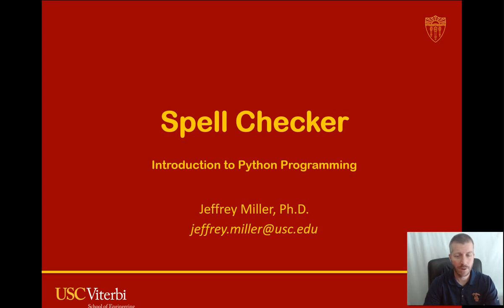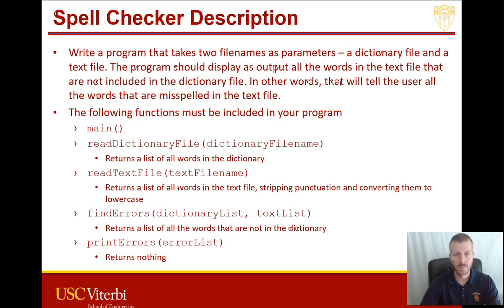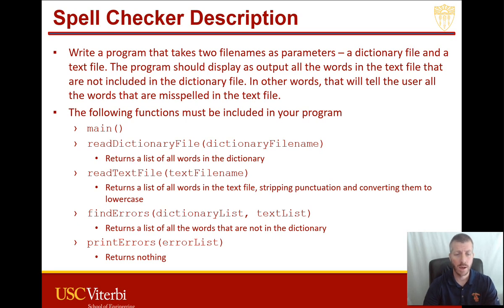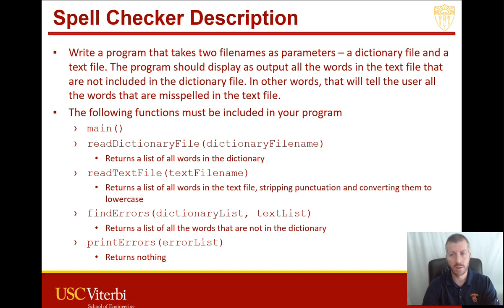Hello everyone. Today we're going to be writing a spell checker program in Python. Here's a description of the program. We're going to have it take two file names as parameters — we're going to prompt the user to enter two file names. One is going to be a dictionary file, which contains a universal list of all the words available in our language, and a text file. The program is then going to display as output all the words in the text file that are not in the dictionary file — in other words, all of the words that are misspelled.